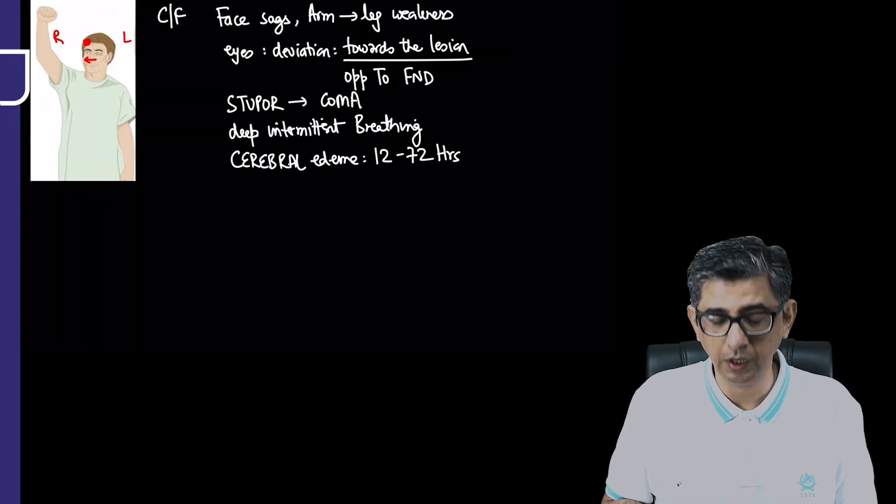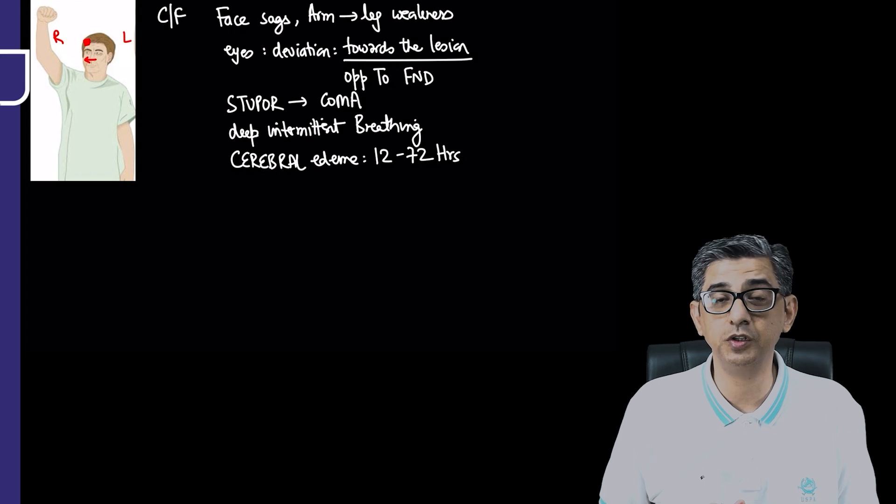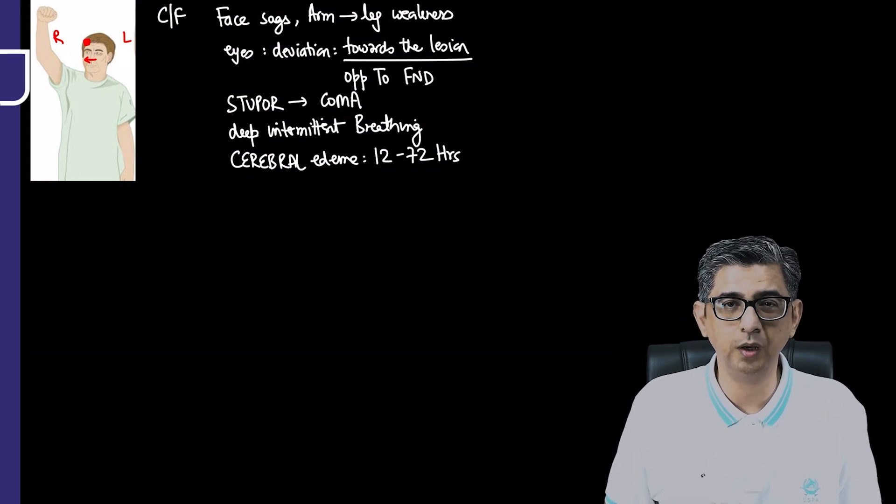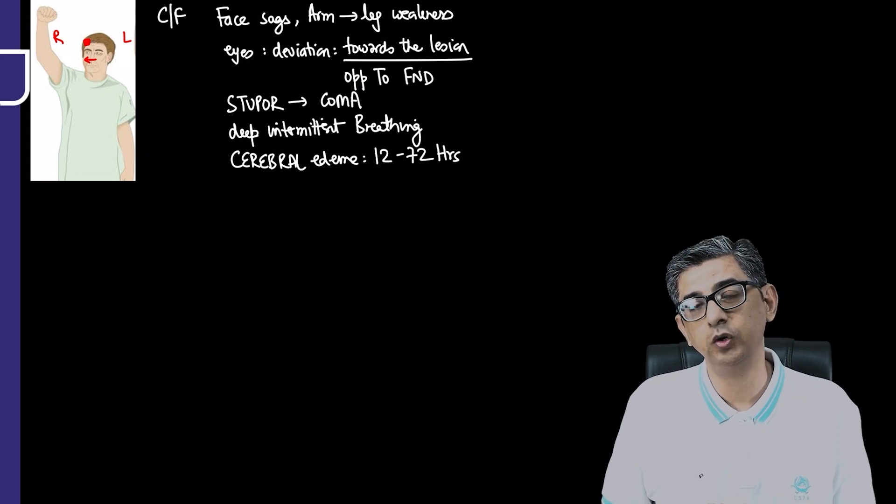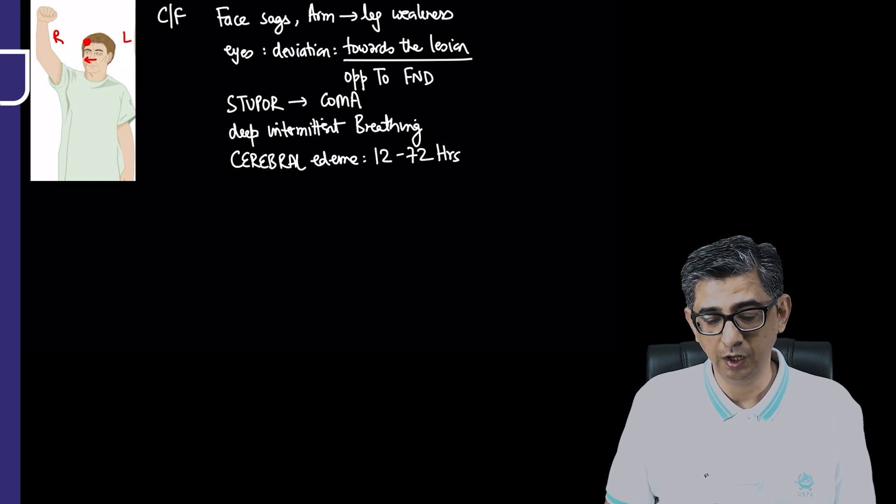In my subsequent slides I'll explain peculiar features of thalamic hemorrhage versus pontine hemorrhage. Pontine you know will have pinpoint pupils. You could also have cerebellar hemorrhage. Let's look at specific features for these subsites.